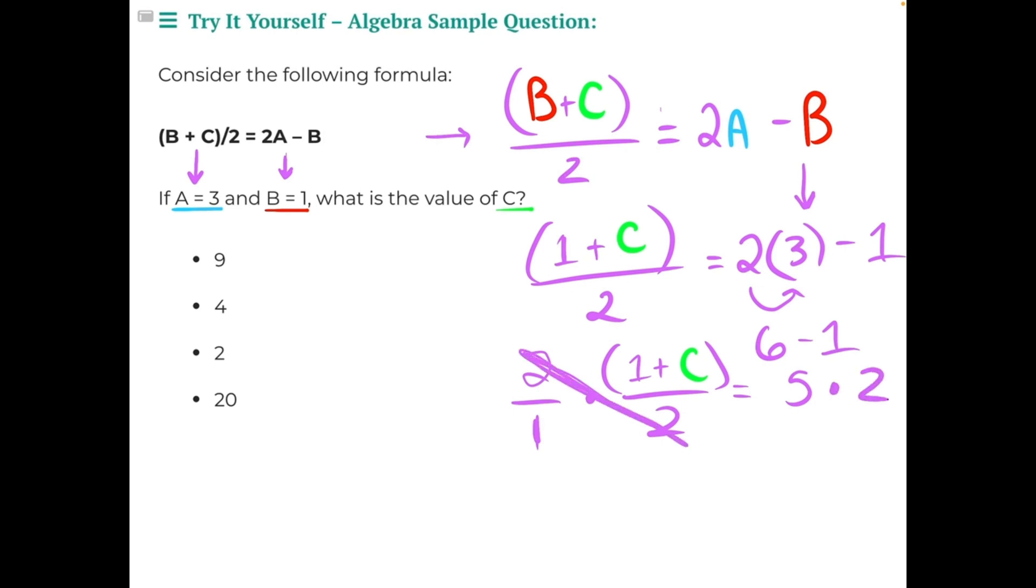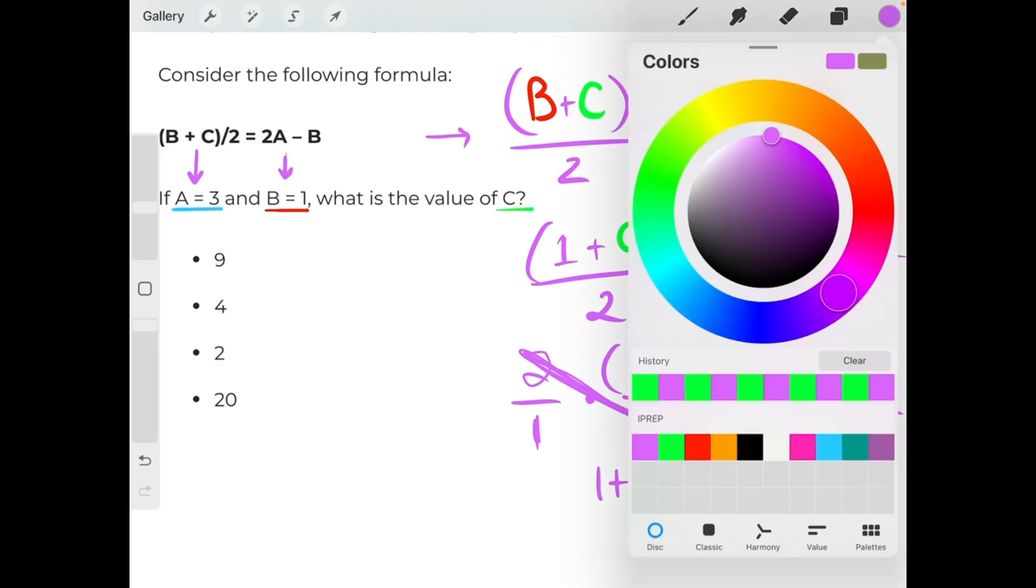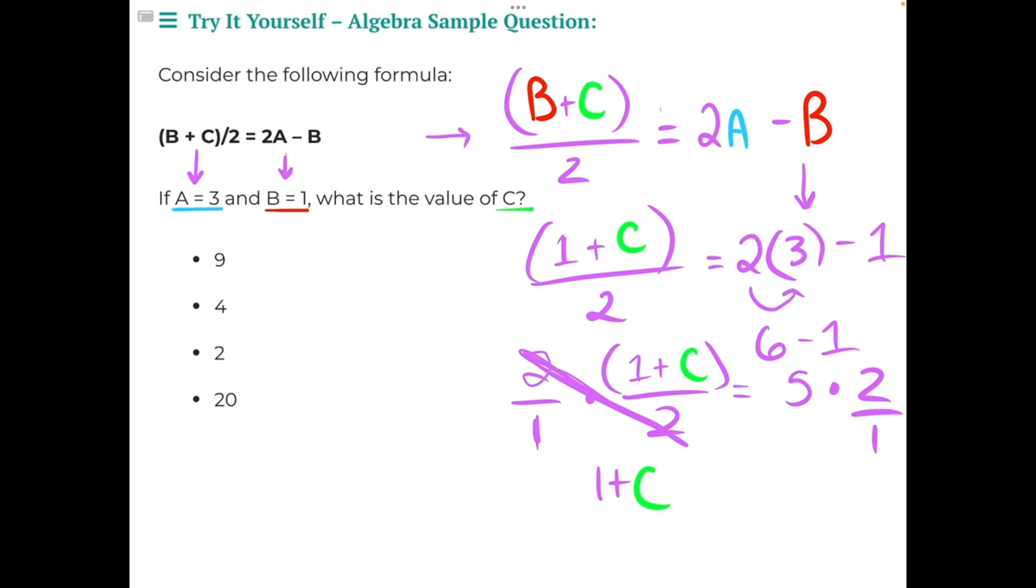And on the other side, we would also multiply by a fraction of 2 over 1, leaving us with just the numerator, 1 plus c. And then on the right side of the equal sign, we would have 5 times 2, because 2 over 1 is just 2. So 5 times 2 would give us 10.